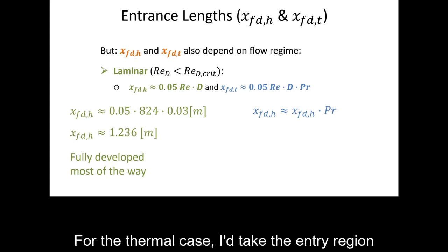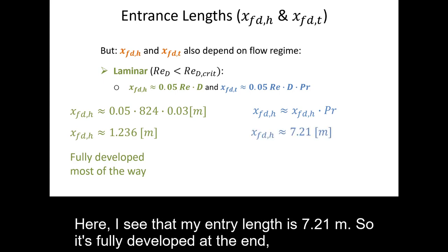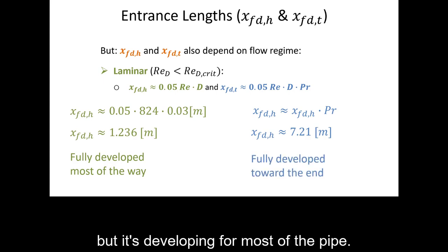For the thermal entry length, I take the hydrodynamic entry length and multiply by the Prandtl number, giving a thermal entry length of 7.21 meters. So the flow is thermally fully developed at the end, but it is still developing for most of the pipe length.